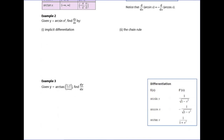Example two asks us to differentiate arcsin(x²) — that x² is inside the bracket. It asks us to do it two ways: by implicit differentiation and by using the chain rule. For implicit differentiation, take sine of both sides to write x² = sin(y), then differentiate both sides with respect to x: x² differentiates to 2x, sin(y) differentiates to cos(y), and because it's in terms of y we multiply by dy/dx.